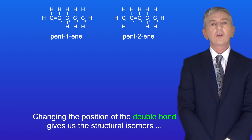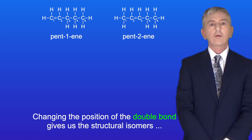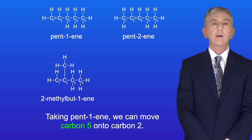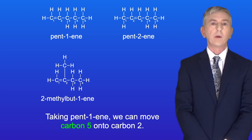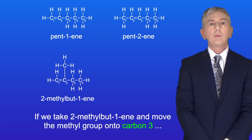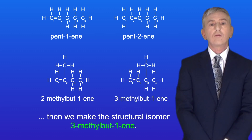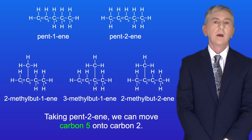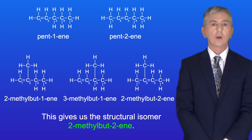Changing the position of the double bond gives us the structural isomers pent-1-ene and pent-2-ene. Taking pent-1-ene and moving carbon 5 onto carbon 2 gives us 2-methylbut-1-ene. Moving the methyl group of 2-methylbut-1-ene onto carbon 3 gives 3-methylbut-1-ene. Taking pent-2-ene and moving carbon 5 onto carbon 2 gives 2-methylbut-2-ene.